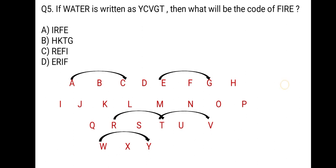Then, what will be the code of FIRE? Can we code FIRE in the same way? So, try it in your notebooks. F, skipping next letter your code will be H. I, skipping next letter code will be K. R becomes T and E becomes G. Now, you can check your answer from the given options. So, answer is B, HKTG. So, I hope children, these two types are clear to you.